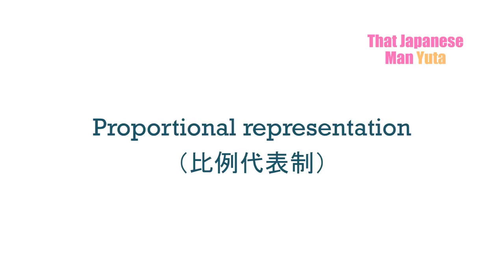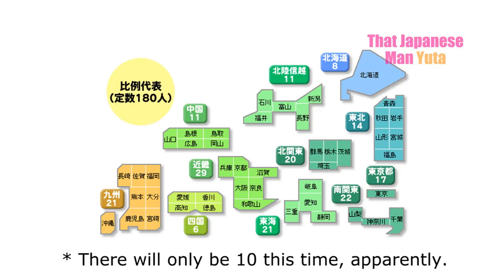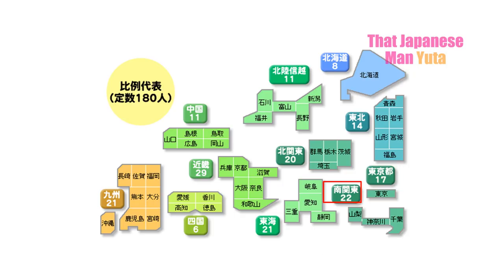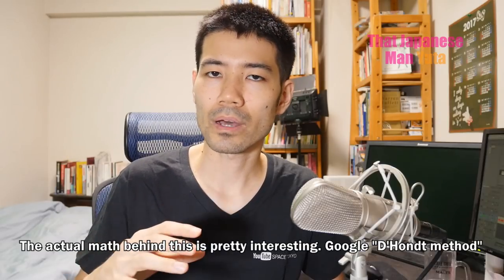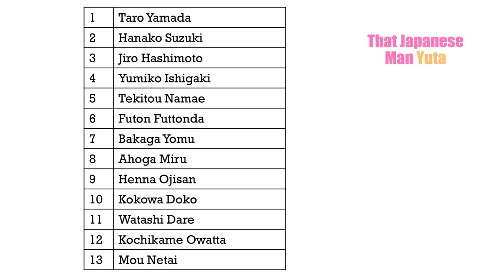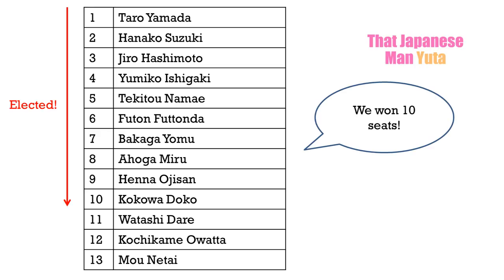The second one is more interesting. This is called proportional representation. Basically, you write the name of a party. Japan has 11 block districts for this, and each district has its number of seats. Each party can win seats based on how many votes they get. This is different from the electoral college in the United States where the winner takes all the seats — because in Japan, the winner doesn't necessarily take all the seats. Each party has a list of candidates for proportional representation. If a party wins 10 seats, the top 10 candidates on the list get elected. If a candidate has already won an electoral district, the seat goes to the next candidate. And if you don't belong to a political party, there's no chance you will get elected this way, so this could be an incentive to join a political party.